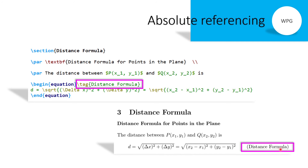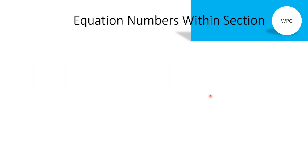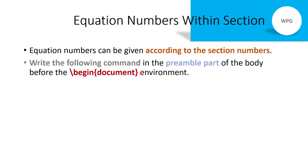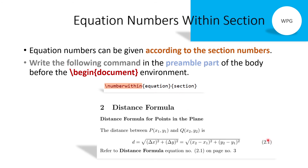In the output, instead of the equation number, the name 'Distance Formula' now appears — this is absolute referencing. Now let's see equation numbers within sections, which means equation numbers can be given according to section numbers. To do this, write the following command in the preamble before the \begin{document}: \numberwithin{equation}{section}.